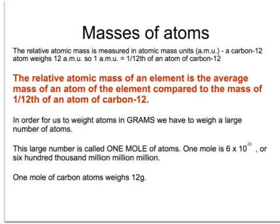Relative atomic mass — but relative to what? Well, relative to a kind of gold standard atom which we take as being our unit. That atom is carbon — not just any old carbon atom, but a particular isotope of carbon that weighs 12 atomic mass units. So one atomic mass unit is one twelfth of the mass of one atom of carbon-12. And the relative atomic mass of any other element is the average mass of all the atoms of that element compared to this one twelfth of the mass of an atom of carbon-12.